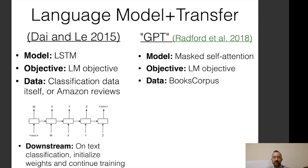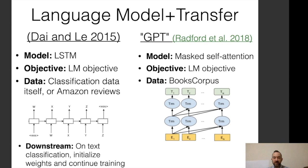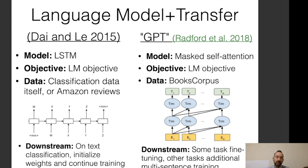This was expanded several years later to transformer models with the same left-to-right language modeling objective, trained on the Books Corpus — this was the original GPT. On downstream tasks it was used for fine-tuning, and for sentence pair classification tasks it used additional multi-sentence training to refine representations. GPT-2 and GPT-3 are more famous, but GPT was one of the early examples of transformer-based language models applied to transfer learning.